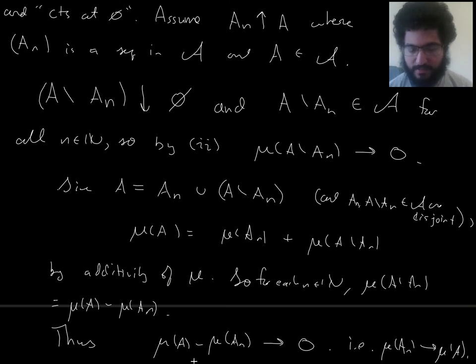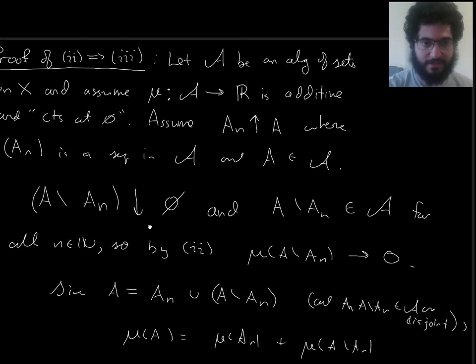Since μ of A is just a constant as far as this sequence is concerned. This is by the algebraic limit theorem. All right, and that's what was needed. So, that's it for 2 implies 3.